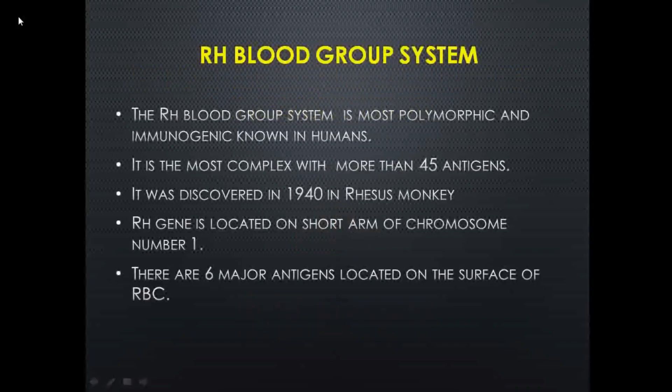Previously we have seen what is ABO blood group system, which is based on the type of antigen present on the RBC surfaces. In the same way, one more antigen is present on the RBCs of human beings. The Rh blood group system is the most polymorphic and immunogenic known in humans — it is the most complex, with more than 45 antigens present.